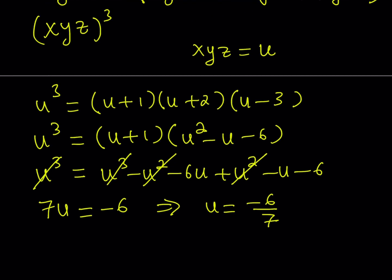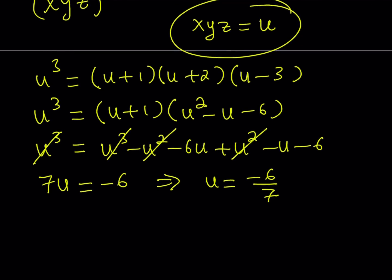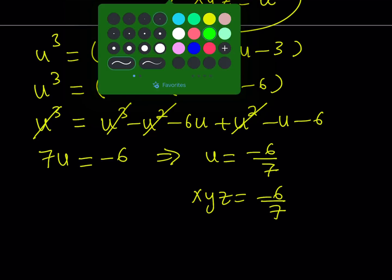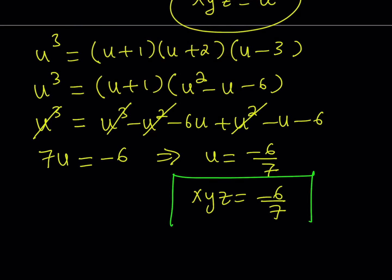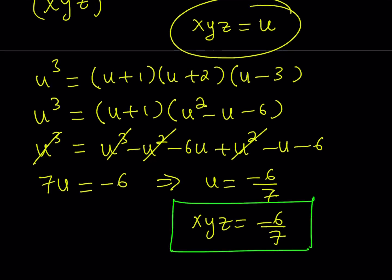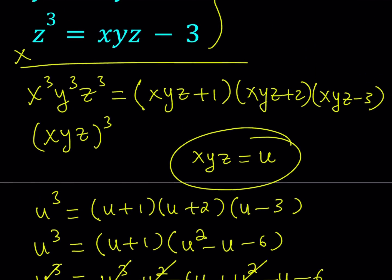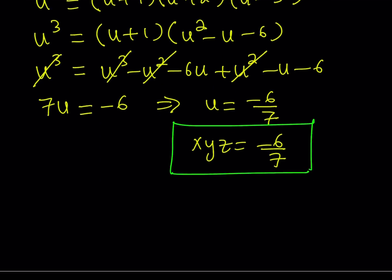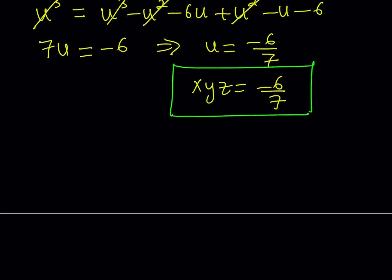Now what is u equal to? u equals xyz, so this means xyz equals negative 6 over 7. This is an important finding because we're going to use it in our system. Remember, our system gives x cubed, y cubed, z cubed all in terms of xyz, so we can substitute everything.